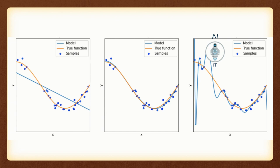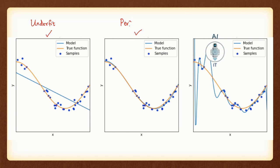Now what if we are not utilizing the training dataset and testing dataset properly? Suppose we take less number of samples for training the model — this is what we call underfitting. Here we have less number of samples used for training, so the model will not perfectly fit our project. Now in the second case, we are properly distributing the training and testing dataset, and as a result we arrive at a proper fit — this is what we call a perfect fit.